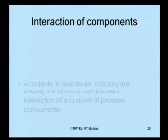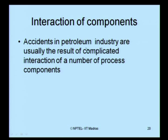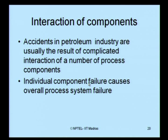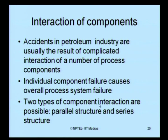Let us look at interaction of components. Accidents in the petroleum industry are usually the result of complicated interaction of a number of process components. The accident is not initiated by just one process component; it may come from interaction of different process components, which is a very common phenomenon in the petroleum industry. The individual component failure actually causes an overall process system failure. There are two types of component interaction: parallel structure and series structure.